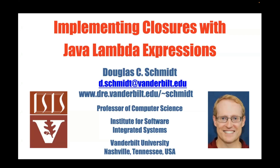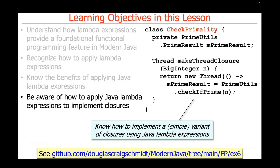We're going to continue our discussion of Java Lambda expressions, and here we're going to discuss how to implement closures with Java Lambda expressions. In this particular lesson, I'll explain what a closure is and I'll also show how you can apply Java Lambda expressions to implement simple variants of closures. This particular example is an interesting one and we'll apply it in some other contexts throughout the rest of the course.